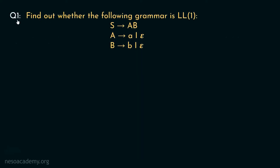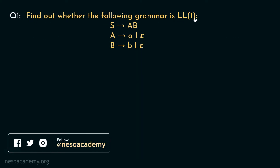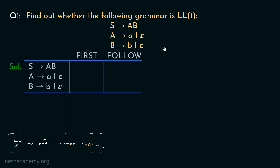Consider the first question: find out whether the following grammar is LL1. We need to find out whether it is capable for LL1 parsing or not. There are three non-terminals involved in this grammar, so let's find out the firsts and follows of them.